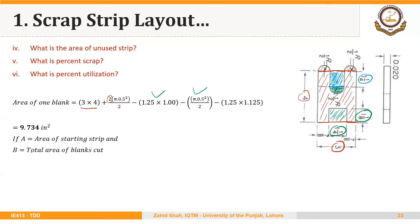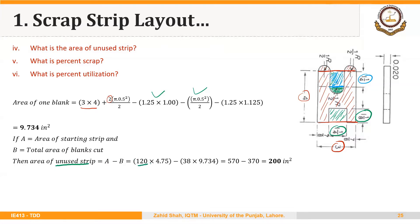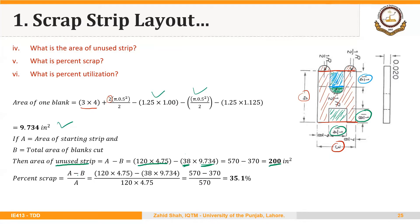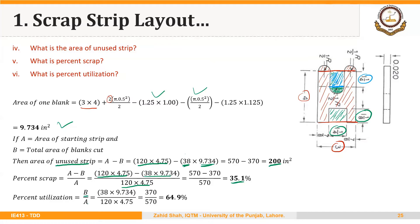If A is the area of the starting strip and B is the total area of the blanks cut, the area of unused strip equals the starting area minus the total area of blanks cut. The starting area of the strip is 120 × 4.75, and we cut 38 blanks, so that is 570 − 370 = 200 square inches of unused strip. Percent scrap is (570 − 370) / 570 = 35.1%. Percent utilization is 100 − 35.1 = 64.9%.